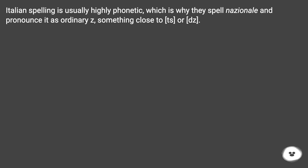Italian spelling is usually highly phonetic, which is why they spell 'nazione' and pronounce it as an ordinary Z — something close to /ts/ or /dz/.